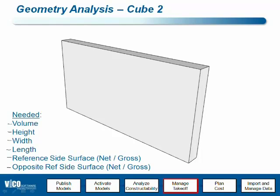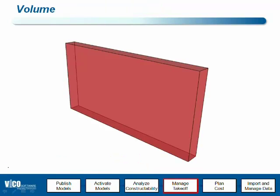Width, length, and reference side surface area are of course very important for walls, and those are the things that we want to get from that cube. Volume is extracted using the module that we have in Takeoff Manager.